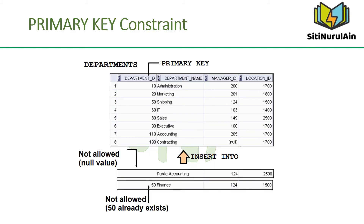A PRIMARY KEY constraint creates a primary key for the table. Only one primary key can be created for each table. The primary key constraint is a column or set of columns that uniquely identifies each row in a table. This constraint enforces the uniqueness of the column or column combination and ensures that no column that is part of the primary key can contain a null value.